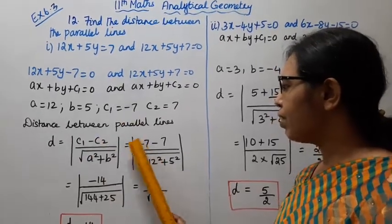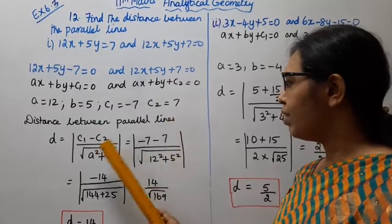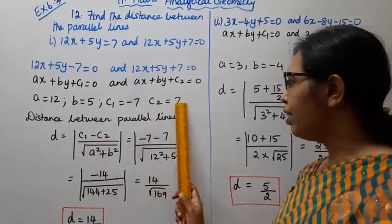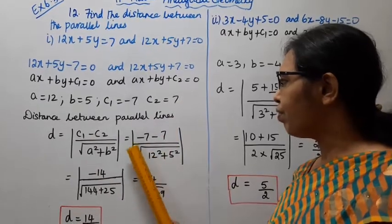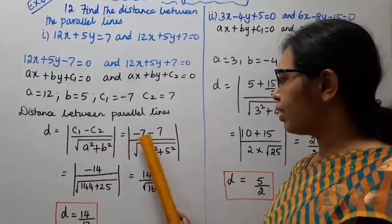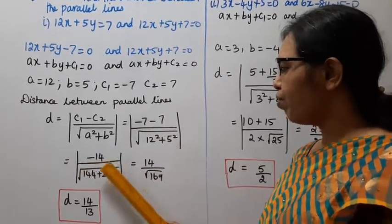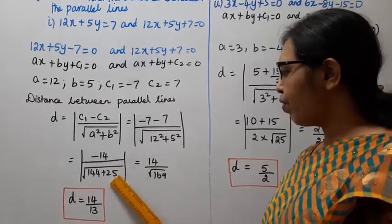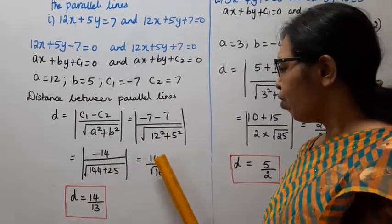C1 is minus 7, C2 is 7. Minus 7 minus 7 by root of A square plus B square, 12 square plus 5 square. Minus 7 minus 7, mod of minus 14 by square root of 144 plus 25.